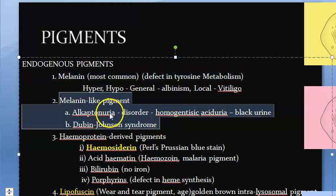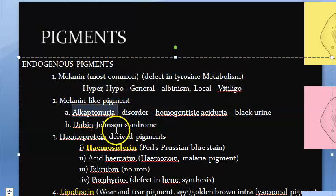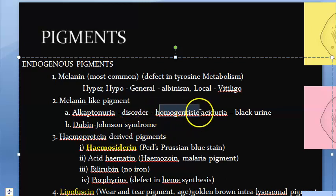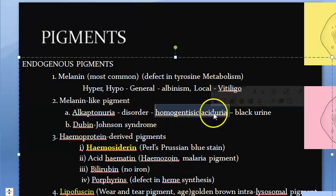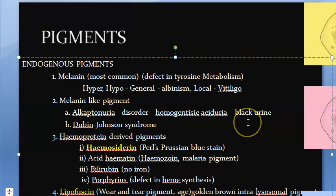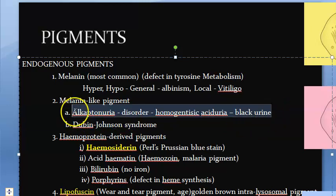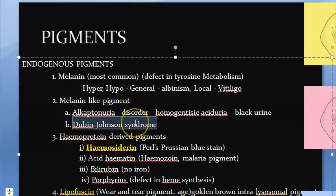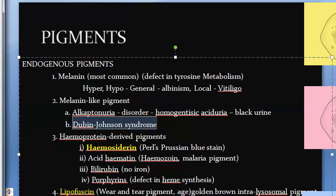A melanin-like pigment can be seen in alkaptonuria — a disorder where there is homogentisic aciduria. When the urine is left to stand for some time, it becomes black. That is alkaptonuria. Then there is Dubin-Johnson syndrome, which involves the liver and excess melanin-like pigment in the cytoplasm.